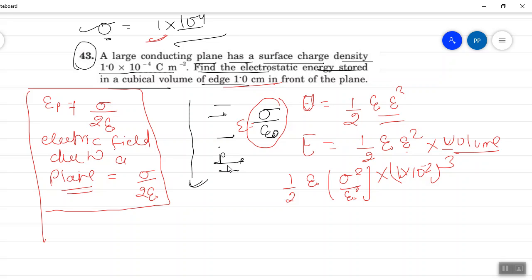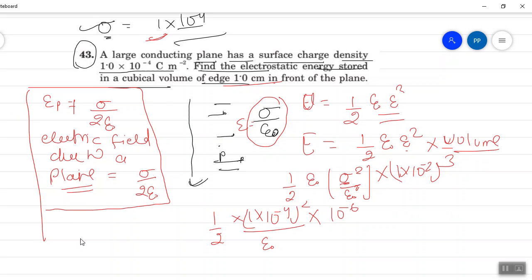Energy is one by two sigma square, which means one into ten to the power minus four squared, divided by epsilon naught, into ten to the power minus six.